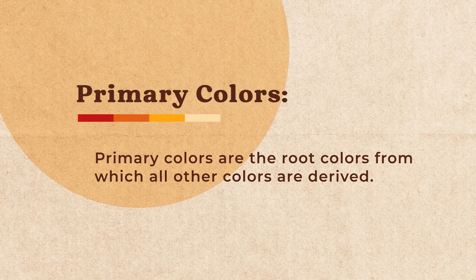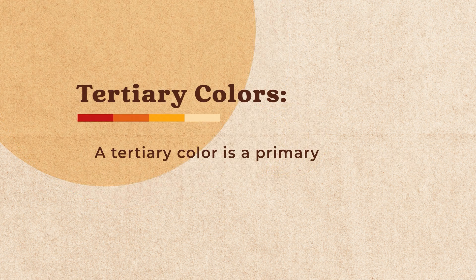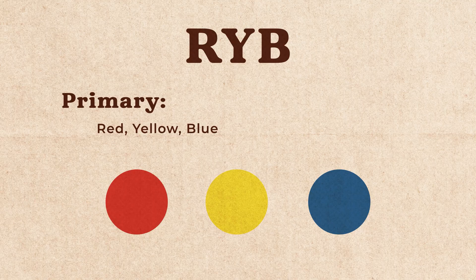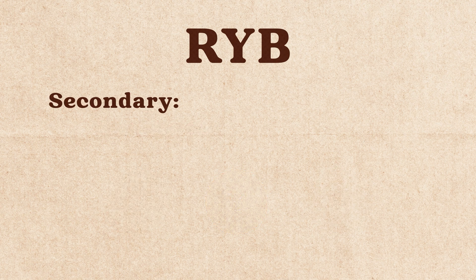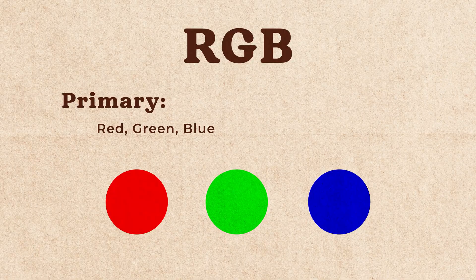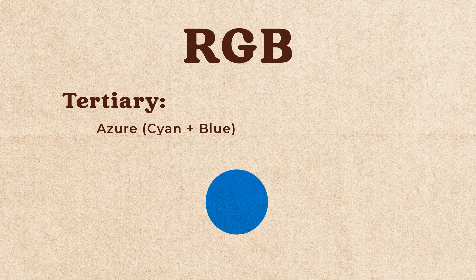Primary colors are the root colors from which all other colors derive — they cannot be created by mixing other colors together. Secondary colors are created by mixing two primary colors together, for example red and blue, or blue and yellow. A tertiary color is a primary color combined with a neighboring secondary color on the color wheel. For RYB, the primary colors are red, yellow, and blue; the secondary colors are purple, green, and orange; and the tertiary colors are red-orange, yellow-orange, yellow-green, blue-green, blue-purple, and red-purple. For RGB, the primary colors are red, green, and blue; the secondary colors are cyan, magenta, and yellow; and the tertiary colors are amber, chartreuse, spring green, azure, violet, and rose.